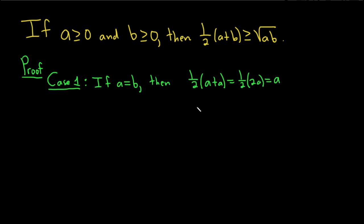The right-hand side would be the square root of a times a, which equals the square root of a squared, which is the absolute value of a. But a is greater than or equal to 0, so this is just a. In this case, we end up with a equal to a, which is certainly true.